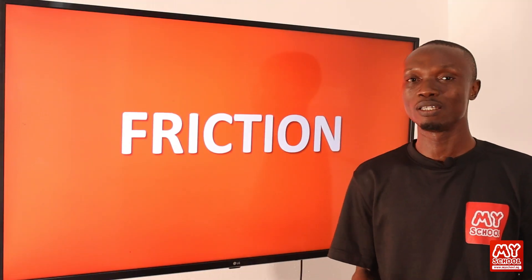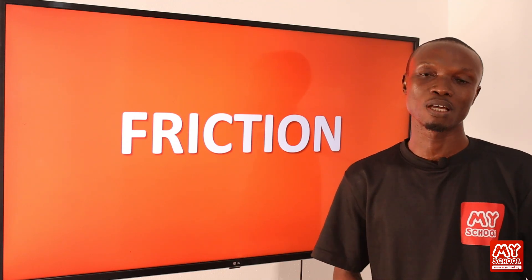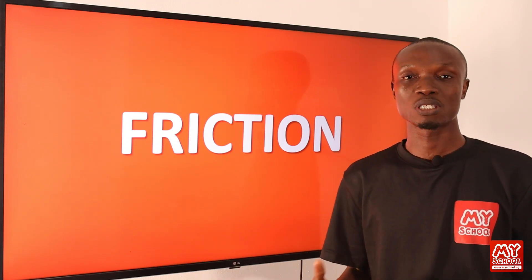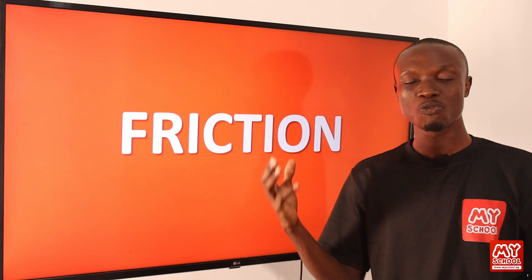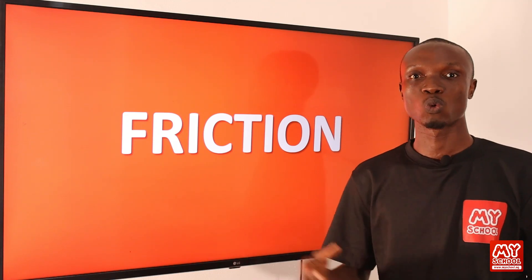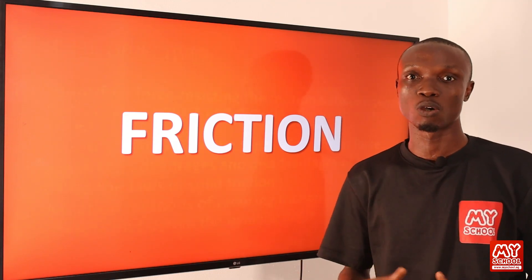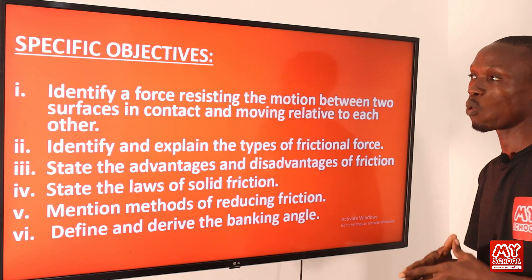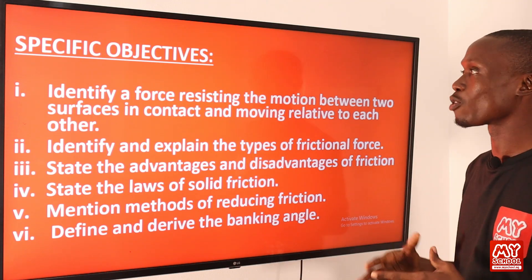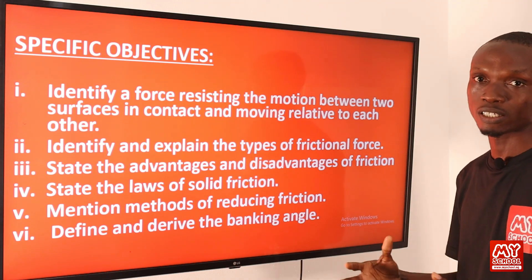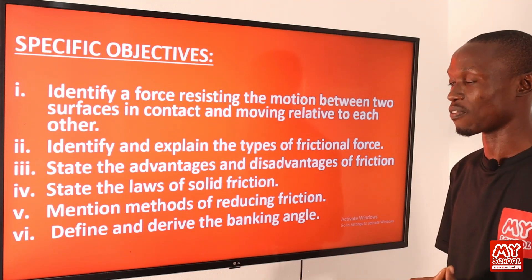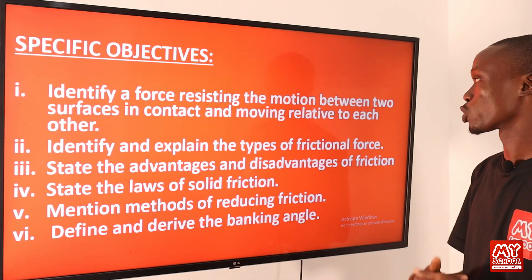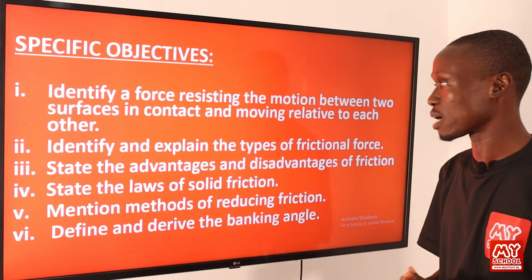In this video we are going to be talking about friction. Before we start the lesson properly, let's move to the next slide to quickly run through the objectives of today's lesson. Objective number one: at the end of this lesson, scholars should be able to identify a force resisting the motion between two surfaces in contact and moving relative to each other.